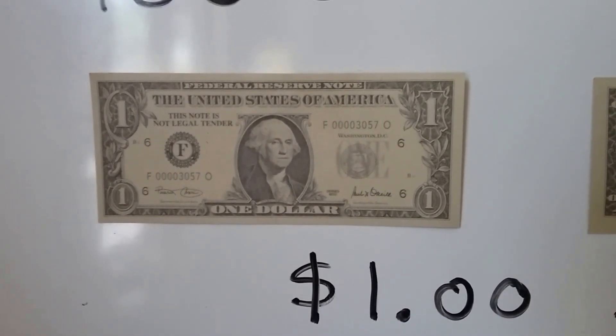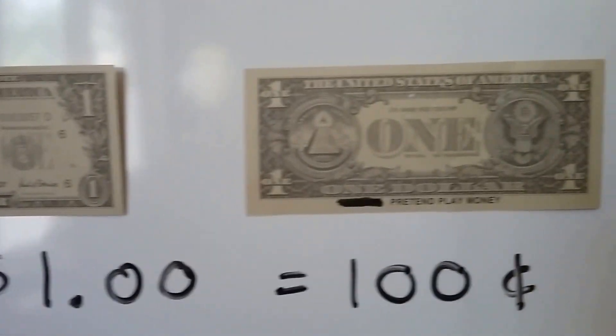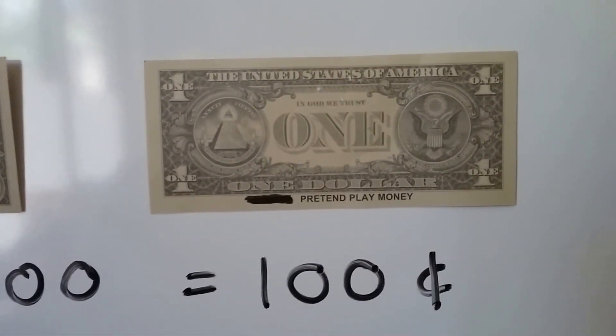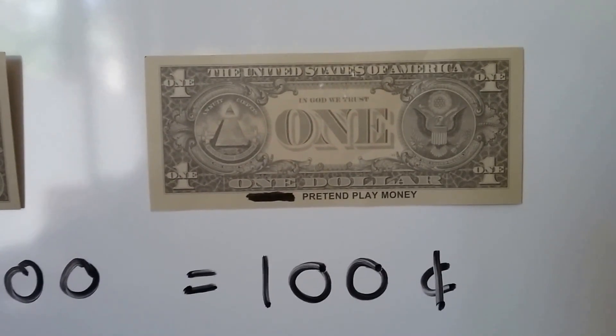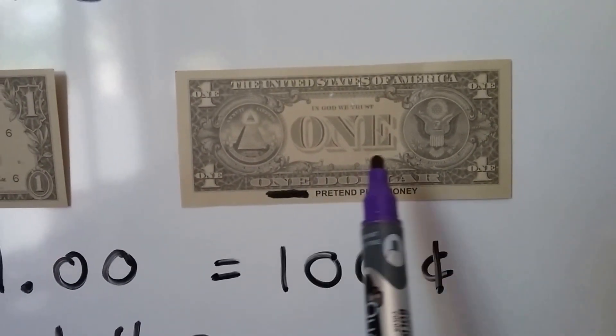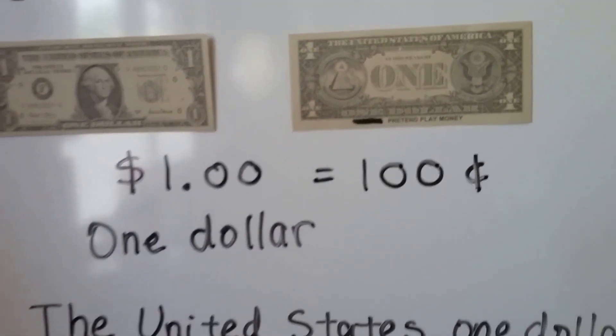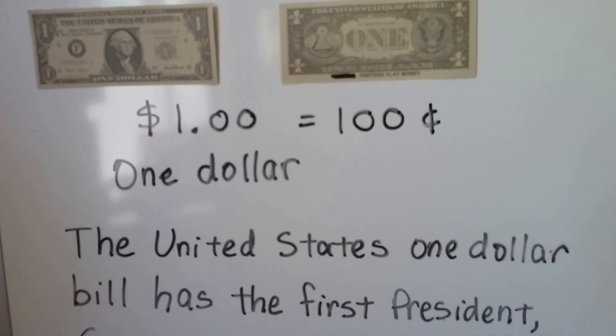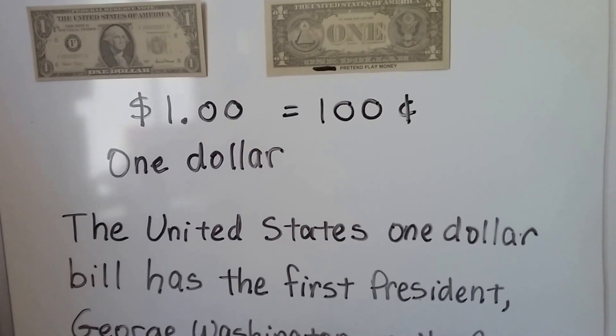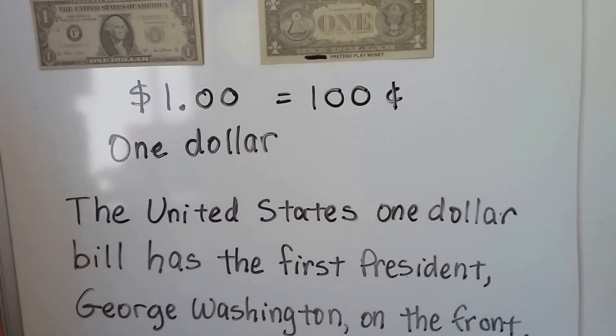That's the front. This is the back. You can see it's pretend play money, but that's what the back looks like. You can see the big words 'one' in the middle here, the United States one dollar bill. That's what we call it, a bill. Has the first president, George Washington, on the front.